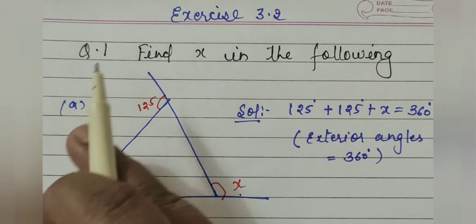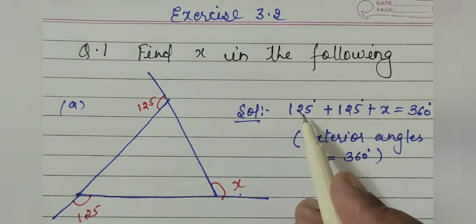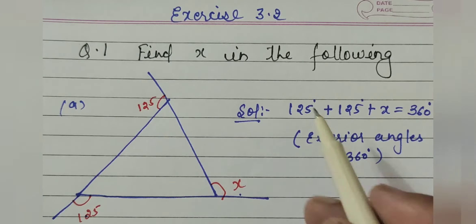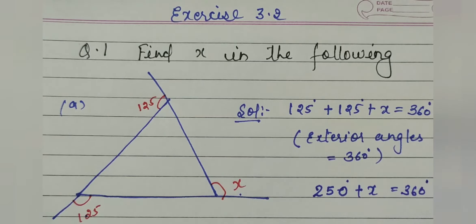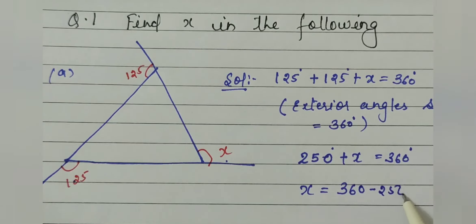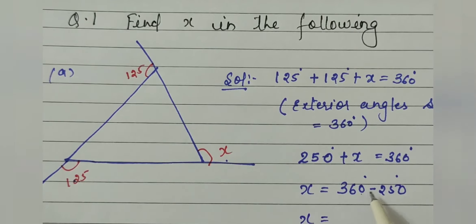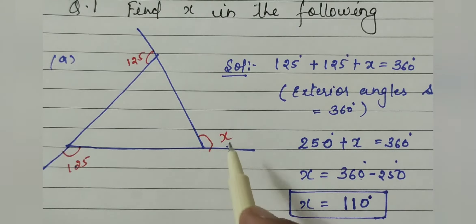So I will solve it: 125 plus 125 plus x equals 360 degrees. That gives 250 plus x equals 360 degrees, so x equals 360 minus 250, which is 110 degrees. Therefore x equals 110 degrees.